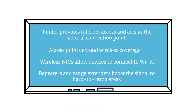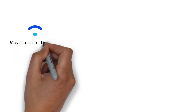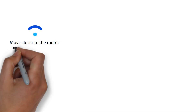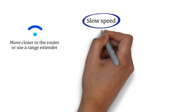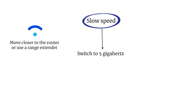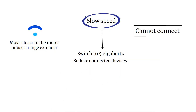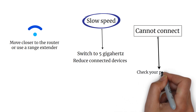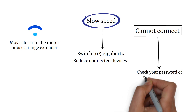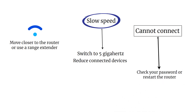Here are common wireless issues and how to fix them. If you have a weak signal, move closer to the router or use a range extender. For slow speeds, switch to 5 GHz or reduce connected devices. If you can't connect at all, check your password or restart the router. These scenarios often appear in CCNA and CompTIA exams.